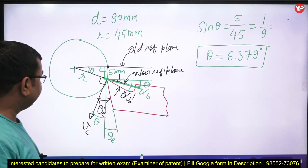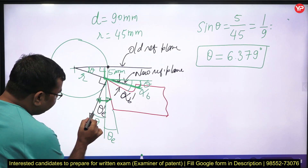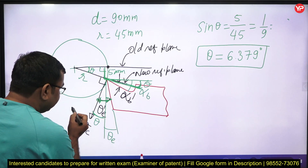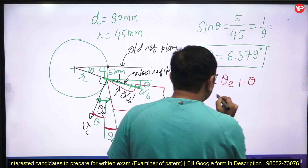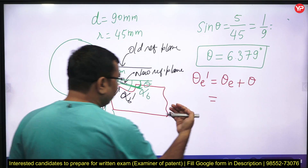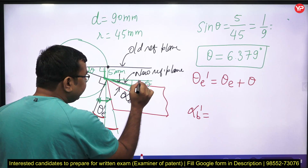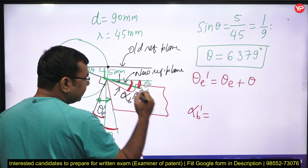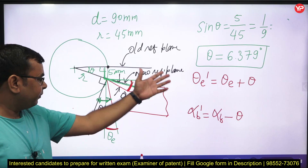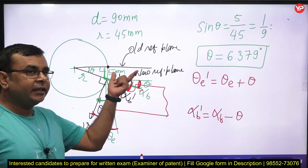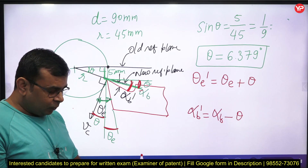Once we get theta, we can find the new angles. The new end relief angle theta_e prime equals theta_e plus theta. The modified back rack angle alpha_b prime equals alpha_b minus theta. So the clearance angle increases and the back rack angle decreases when the tool is placed below the centerline of the workpiece during the turning operation.